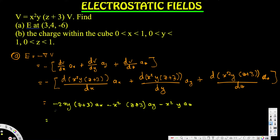Now we have the values (3, 4, -6), so all we have to do is plug them in for x, y, and z. If you calculate this, you will end up with 72 ax + 27 ay − 36 az volts per meter. That is the electric field we are getting after plugging in the values.